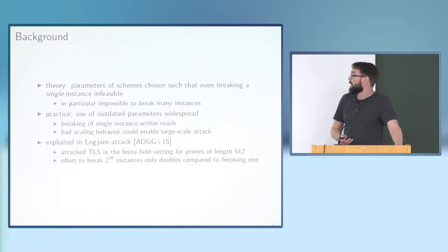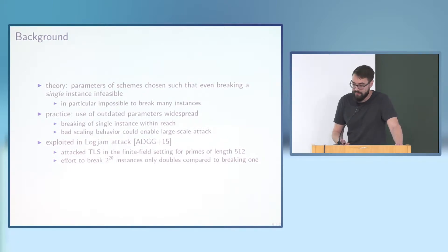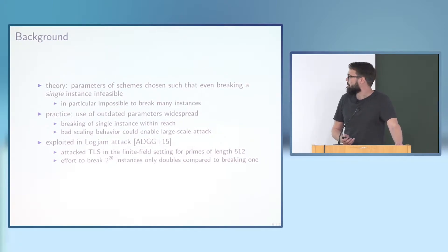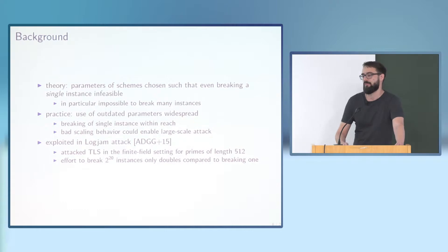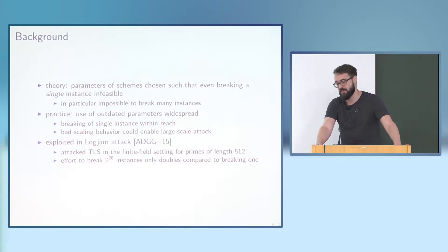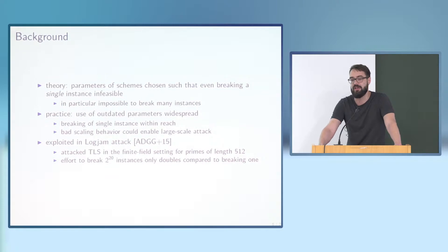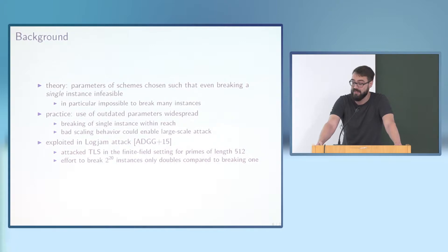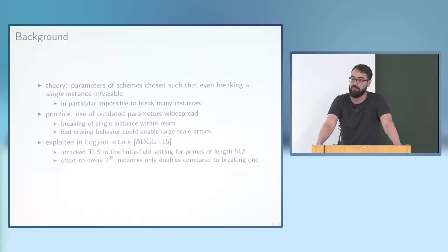This has been exploited in the famous Logjam attack by Adrian et al., where the authors performed a man-in-the-middle attack on TLS instantiated over finite field subgroups of bit length 512. It's a pre-processing attack: after performing substantial pre-processing they were able to attack every instance with very low effort. Essentially, attacking one million instances of the scheme in this parameter range costs just twice as much as breaking one instance.